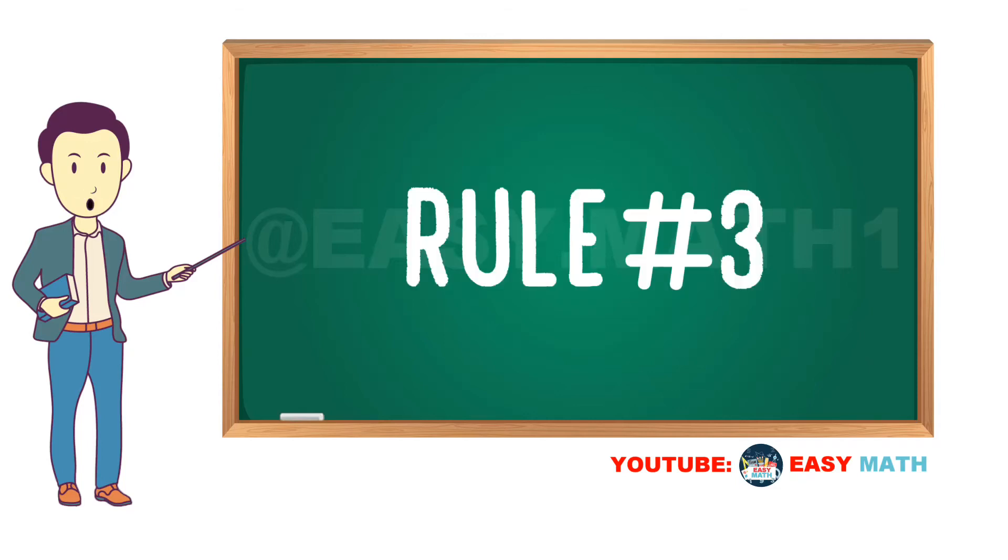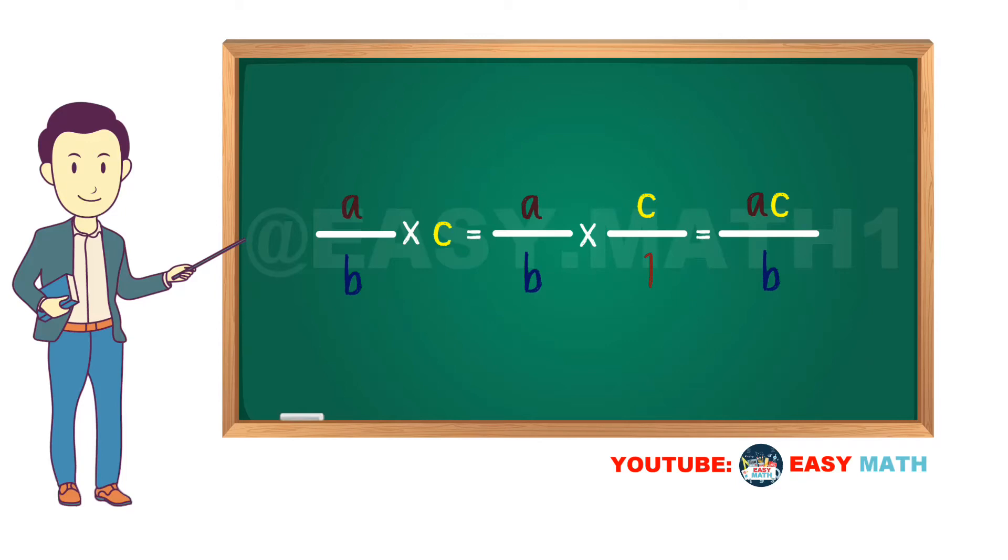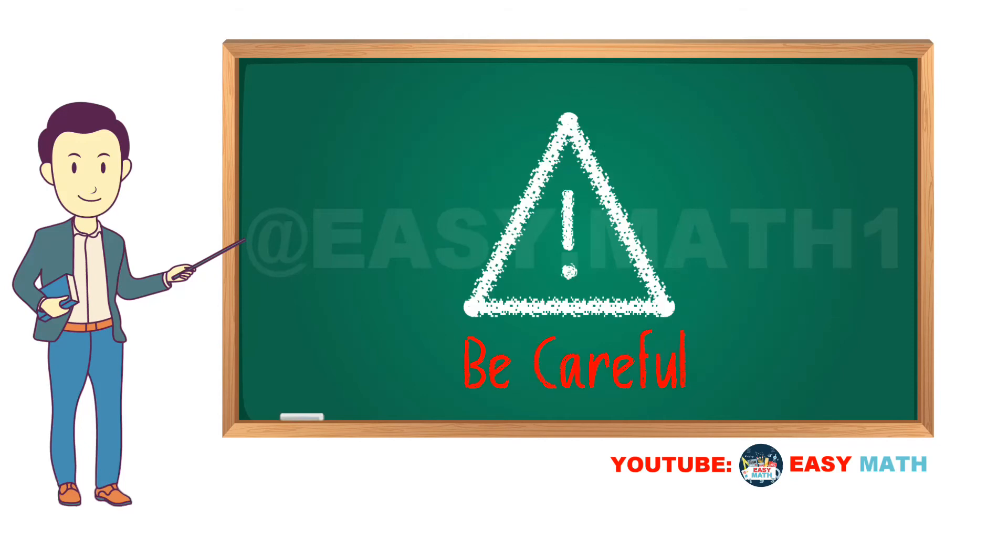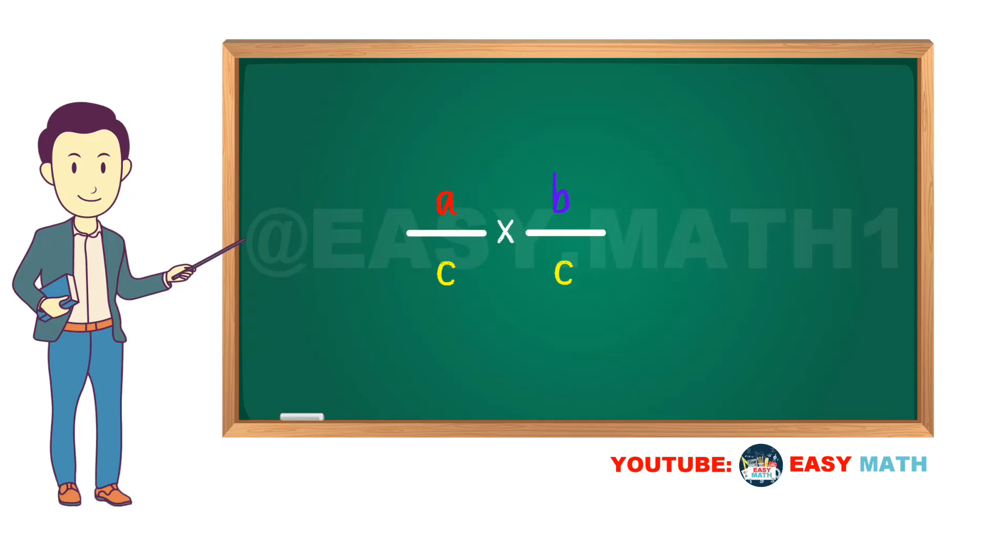Rule number three: A over B times C equals A over B times C over 1 which equals AC over B. For example, 3 over 4 times negative 2 equals 3 over 4 times negative 2 over 1 equals negative 6 over 4. Be careful: A over C times B over C is not equal to A over C.